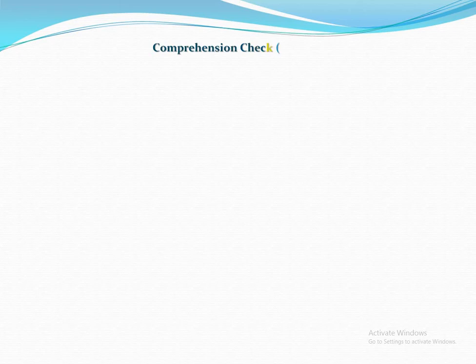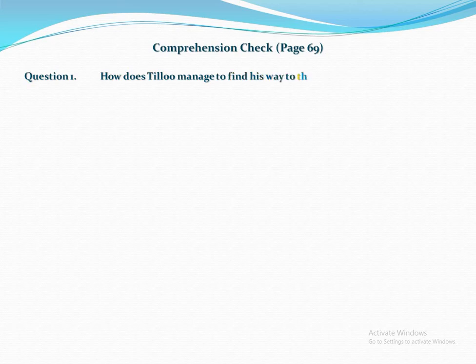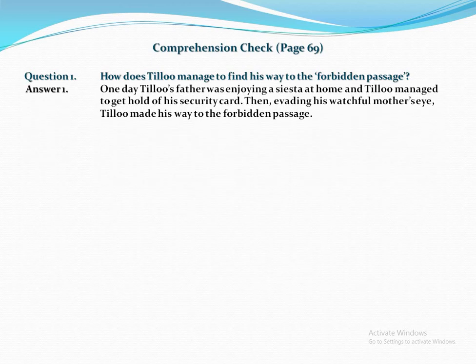Let's go to comprehension check number 1, written on page number 69. The first question is: How does Tillu manage to find his way to the forbidden passage? The answer is: one day Tillu's father was enjoying a siesta at home and Tillu managed to get hold of his security card. Then, evading his watchful mother's eye, Tillu made his way to the forbidden passage.